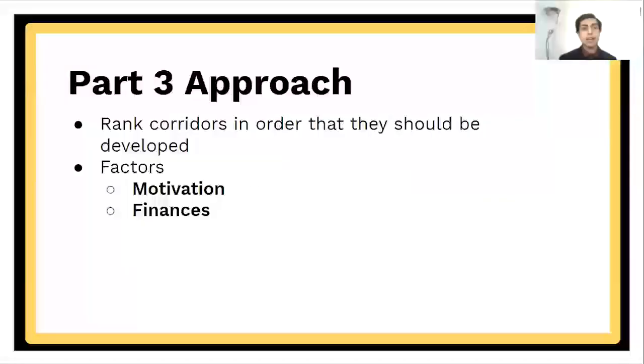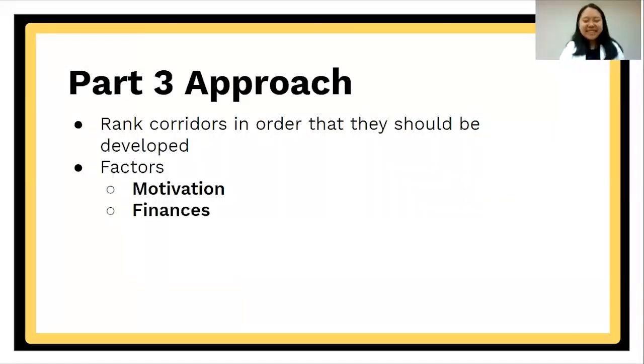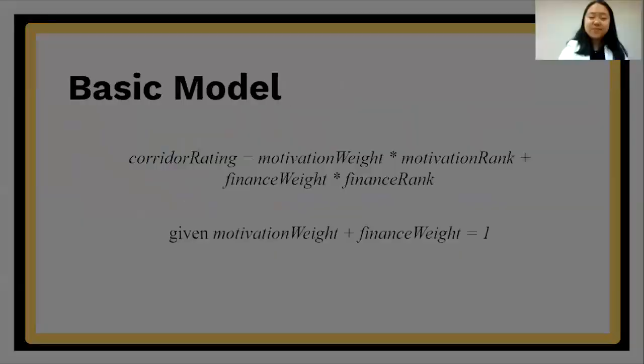So next, Erica is going to tell us about the part three approach. Thank you, Vivek. Part three tasked us with ranking trucking corridors in order of development, so the route that was ranked first should start transitioning to electric trucking first. We base prioritization on the overall motivation of states surrounding the corridors to invest in this environmentally friendly project and the financial aspect of installing and operating this new method of transportation.